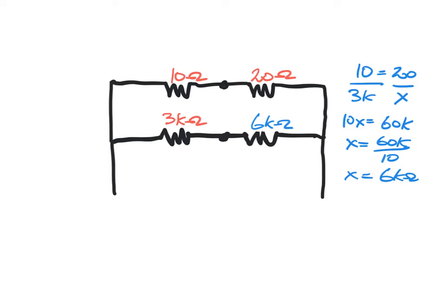And you can see that the proportion actually works out because 10 is half of 20 as 3000 is half of 6000. So the proportion works out.